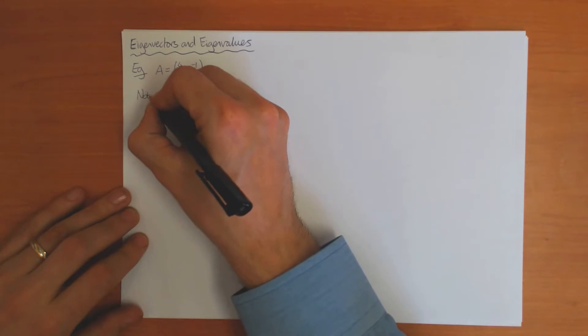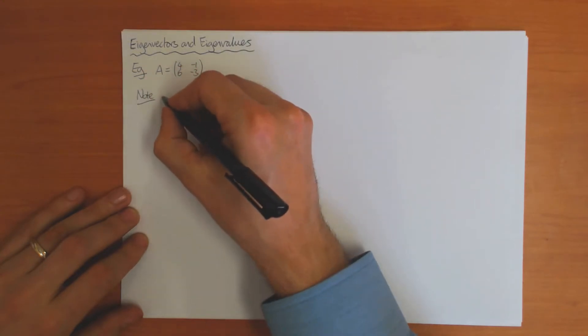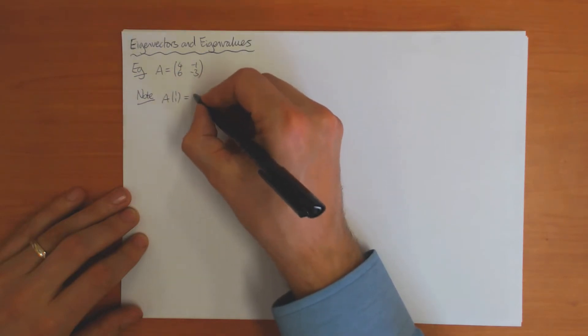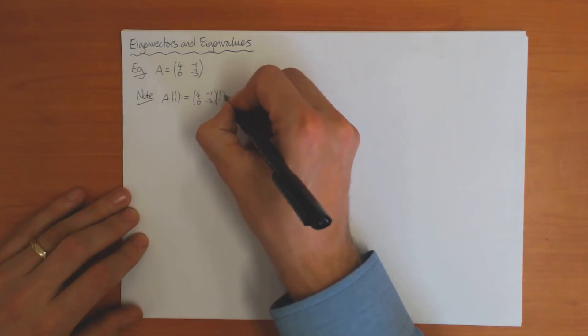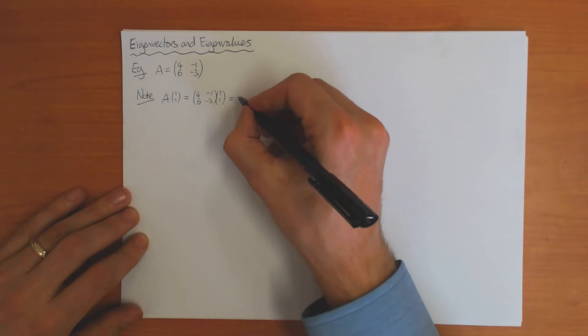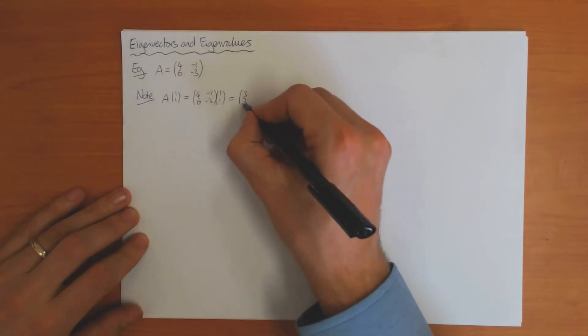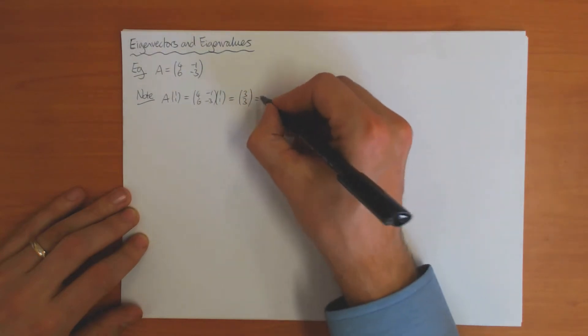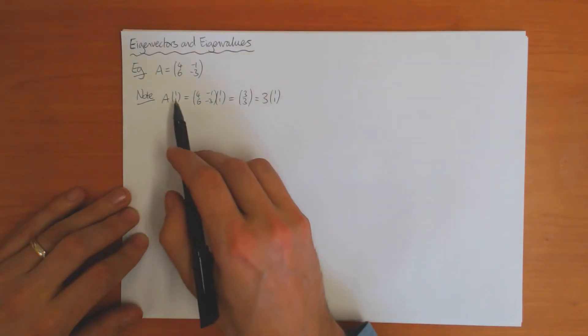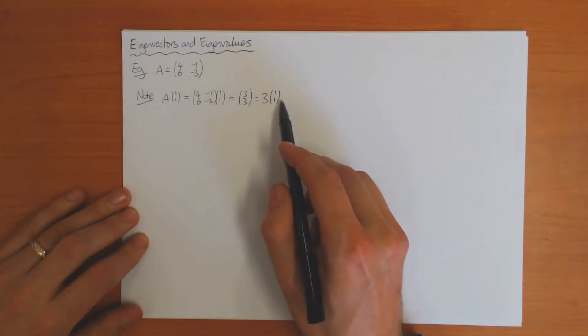If I consider what does A do to the vector (1,1), this is [4 -1; 6 -3] applied to (1,1), which is 4 minus 1 is 3, and 6 minus 3 is 3. You can see that this is 3 times the original vector. What this means is that the vector (1,1), the transformation keeps the direction the same but just multiplies it by a constant.